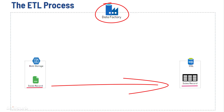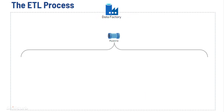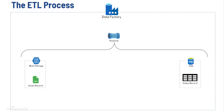Once you are inside Data Factory, the first step is to create the pipeline. A pipeline is a logical grouping of activities that together perform a task. The activities in a pipeline define actions to perform on your data. The next thing we do is create a linked service for both the source and sink. A linked service is used to connect a data store to ADF — it is very similar to a connection string in that it defines the connection information needed for ADF to connect to external resources.